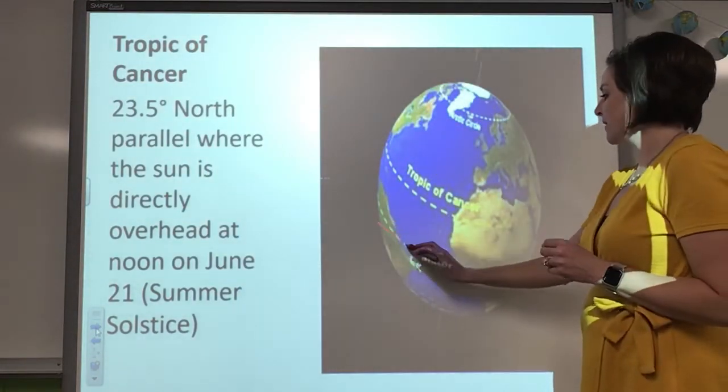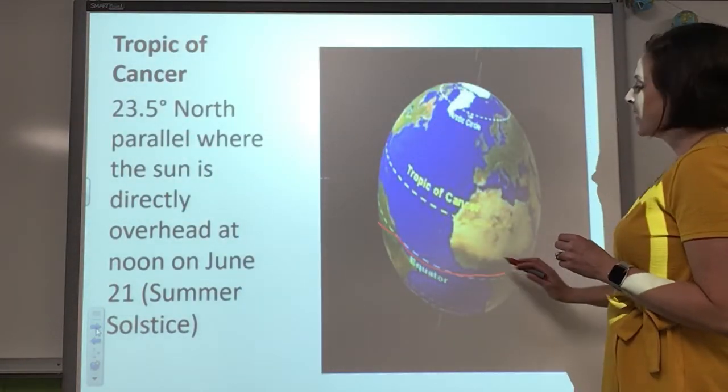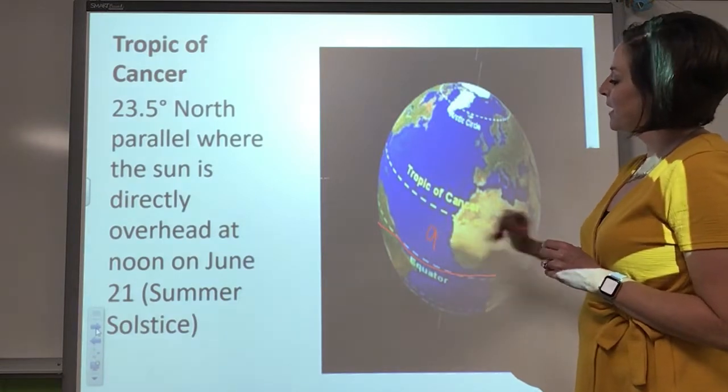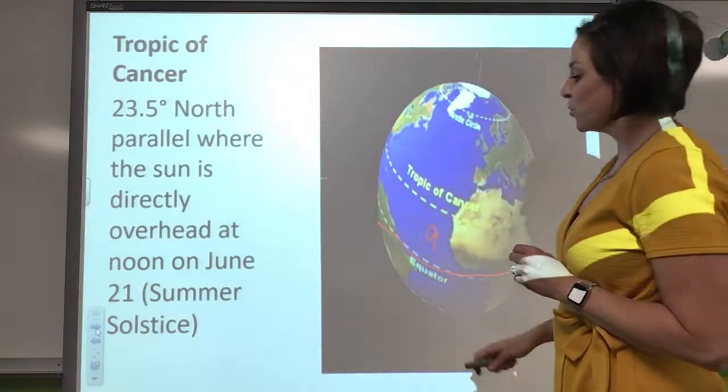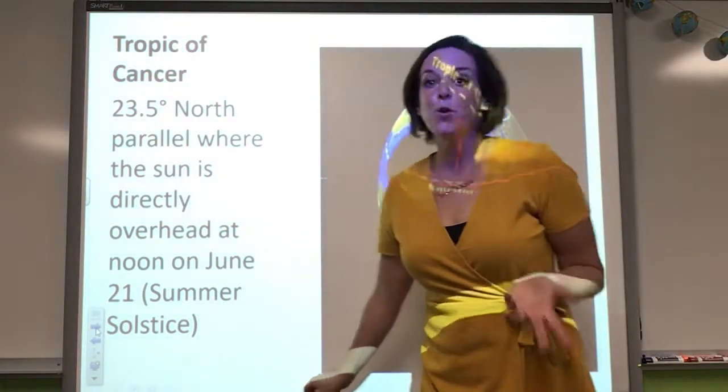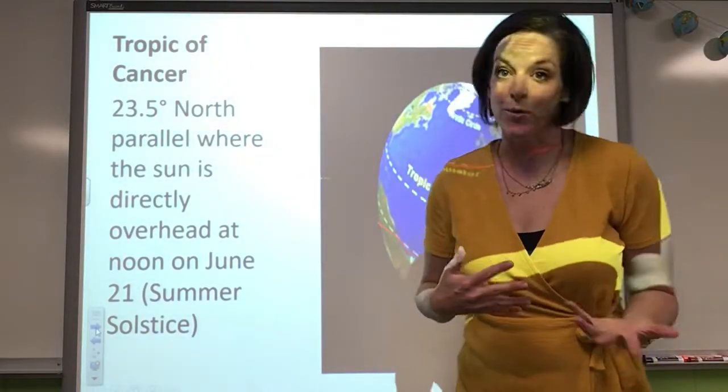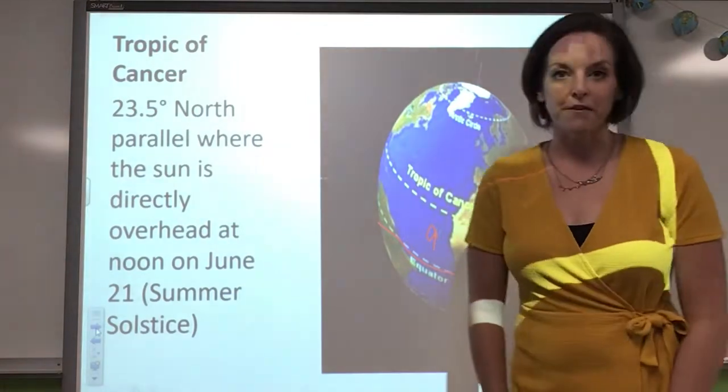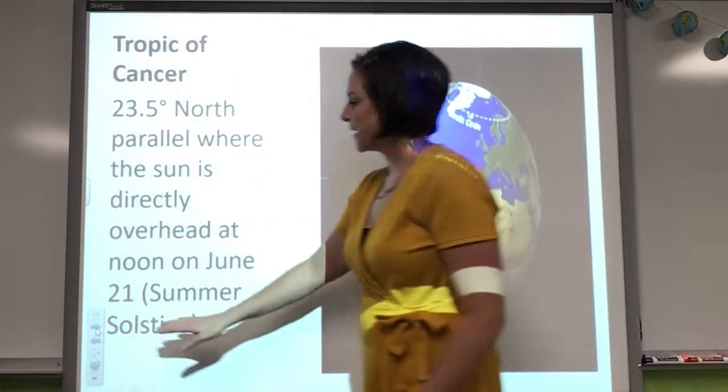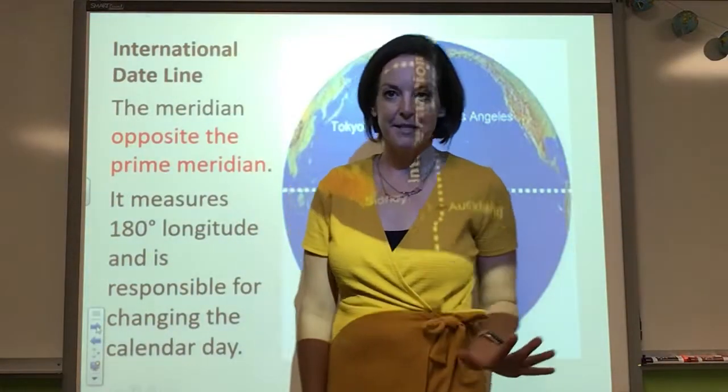So then that means that the Tropic of Cancer, again, here's our equator, and this one's going to be north, and it is 23 and a half degrees north. And this is where the sun is overhead at noon on June 21st, which is our summer solstice. Again, that's way more for Mrs. Bagley's class.